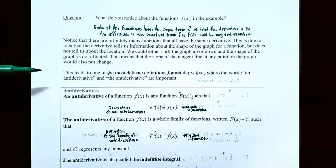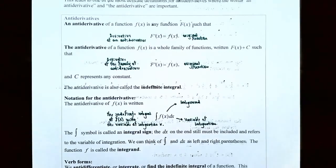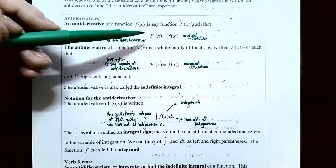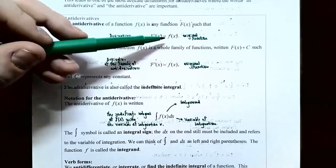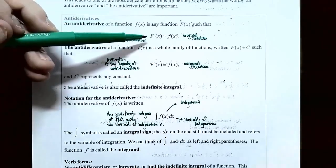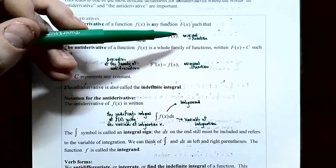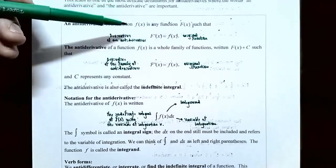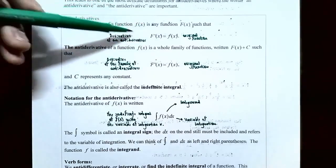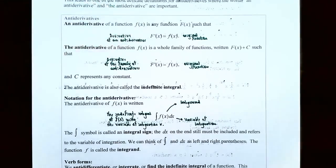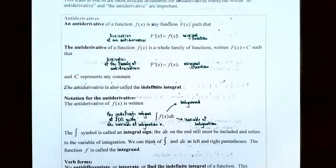This leads to one of the more delicate definitions for antiderivatives where the words 'an antiderivative' and 'the antiderivative' are very important. An antiderivative of a function, lowercase f of x, is a function, capital F of x, such that the derivative of the antiderivative — capital F prime of x — equals the original function f of x. The function they give us in the problem is the lowercase f of x. This is already a derivative. We want to find out what was the function before we took the derivative, and that function is capital F of x.